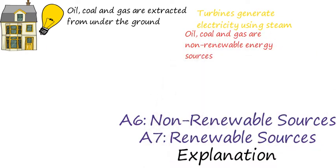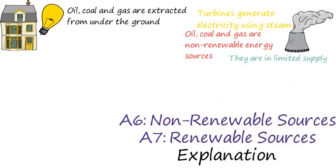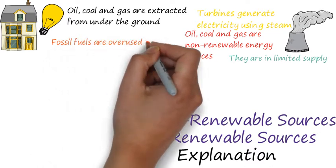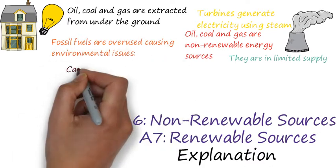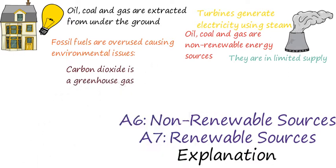Oil, coal and gas are examples of non-renewable energy sources because we have a limited supply of them. However, a lot of people still use these fossil fuels and they are a problem for our environment. A by-product of when they are burnt is carbon dioxide. Carbon dioxide is a greenhouse gas and is believed to contribute to an increased rate of global warming, which many people believe will have a negative effect on our planet in the future.